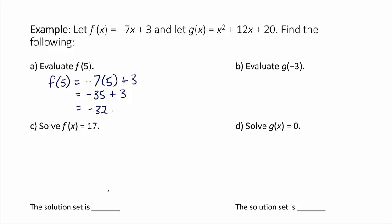Okay, so now we're asked to evaluate g(-3). So now we're working with the function g, and the input value is -3, meaning the x value will be -3. So g(-3) is equal to (-3)², right? So we're inputting -3 in for x, plus 12 times -3, plus 20.